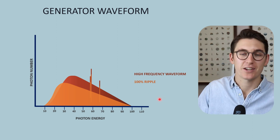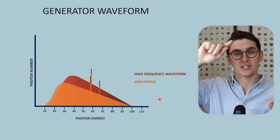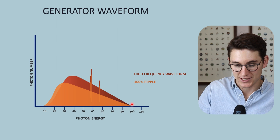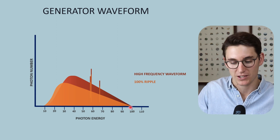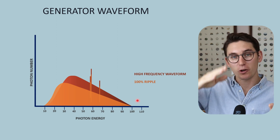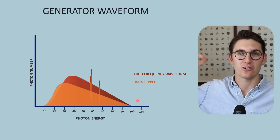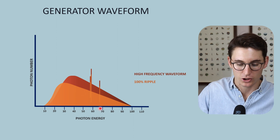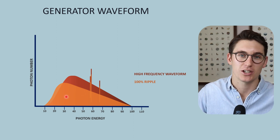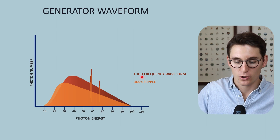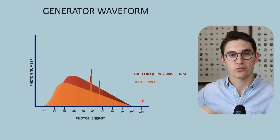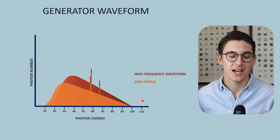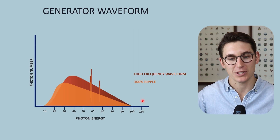When we have a 100% ripple waveform, there are periods of time where our KVP will reach a peak — that's why we have photon energies at the maximum, say 100 keV in this example. But there are long periods of time when our voltage is lower than our KVP, resulting in fewer photons as well as a reduction in the average energy of those photons. So more ripple results in fewer x-rays and lower energy x-rays — a reduction in both x-ray beam quantity and x-ray beam quality.